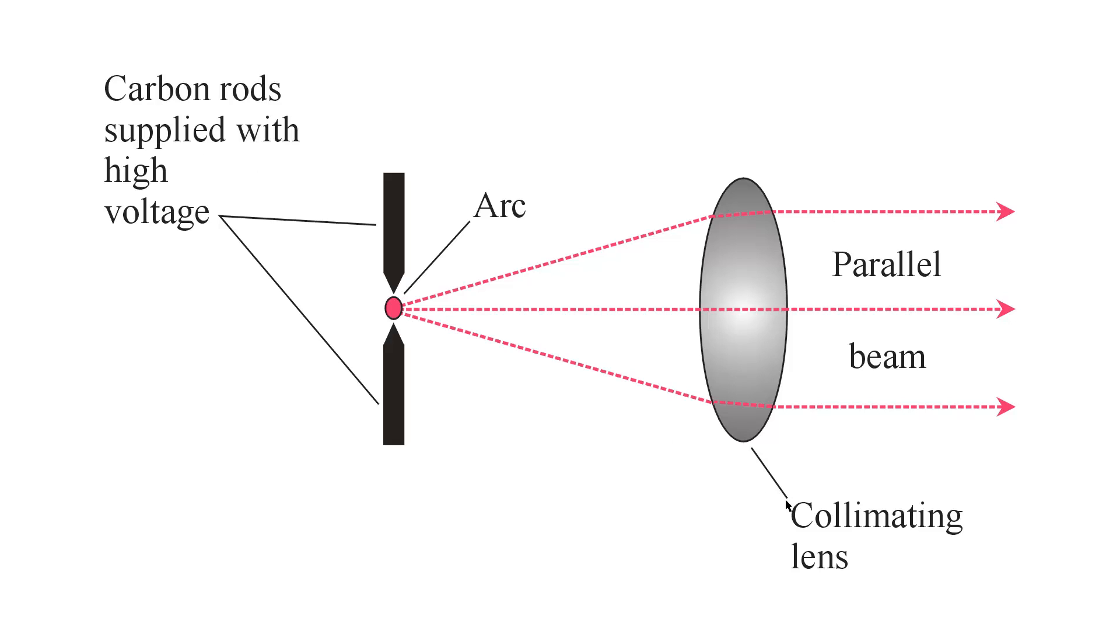In this case, we have a collimating lens. That simply means that it makes the bright arc, the beam from the point source of light, parallel. You can also have a reflector, a concave reflecting mirror, which is equally common.